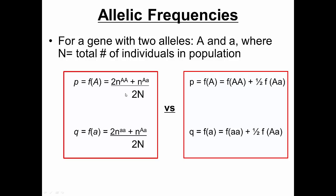On the bottom of the equation, we have 2N because N is the total number of individuals and each individual has two copies of each gene — two chances of donating a big A. That's where the two in the denominator comes from. For q, the recessive allele, the formula is the same except we replace homozygous dominant with homozygous recessive, since homozygous dominant individuals contribute no little a's. We multiply homozygous recessive individuals by two because each contributes two little a's.